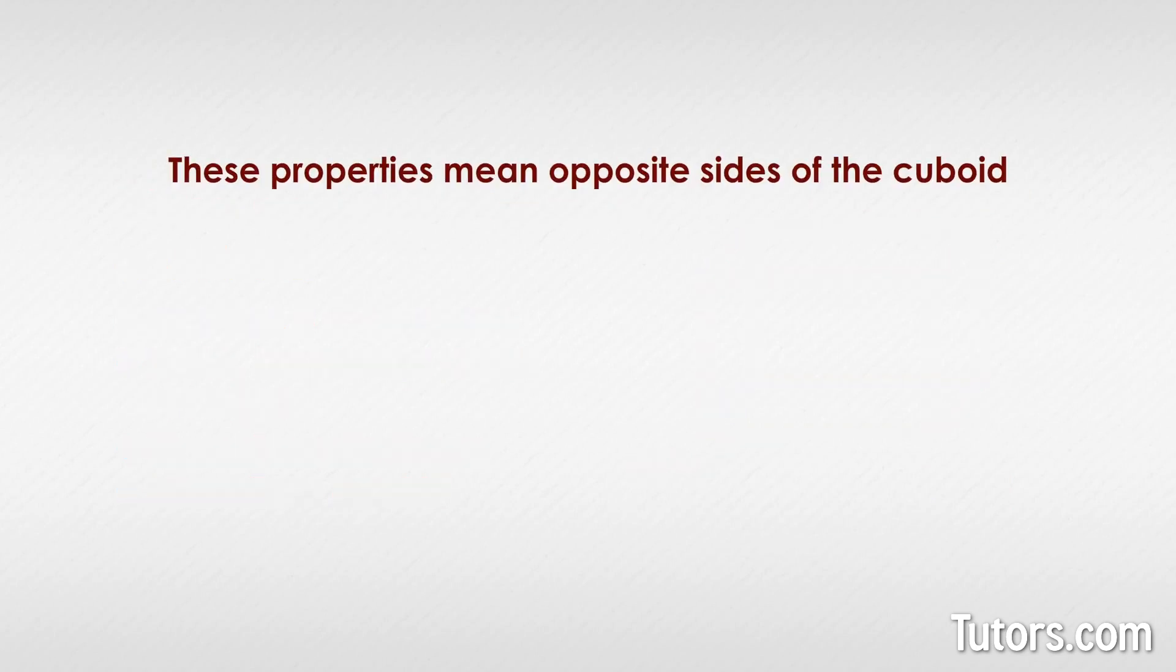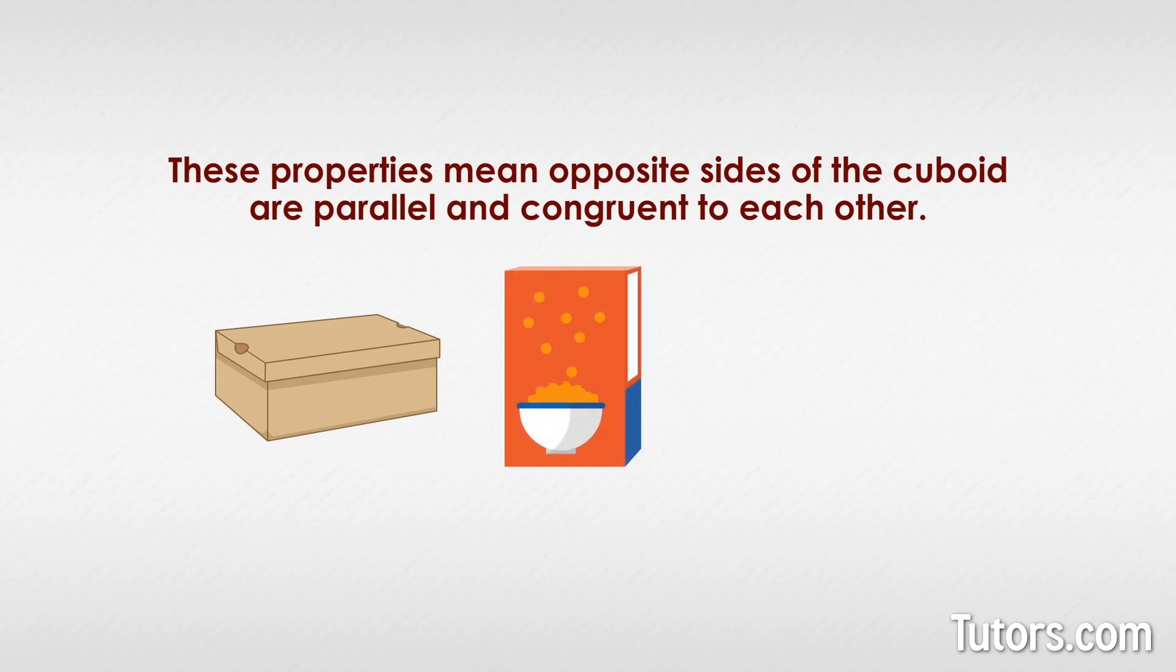These properties mean opposite sides of the cuboid are parallel and congruent to each other, and they result in a box shape, like a shoebox, cereal box, or a textbook.